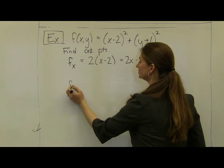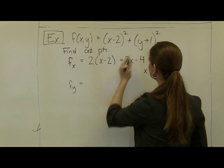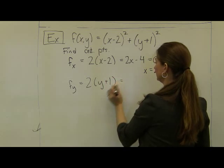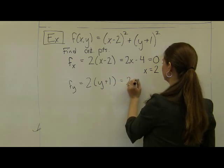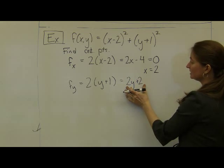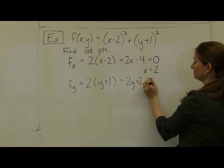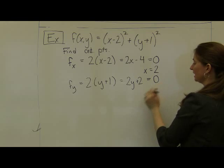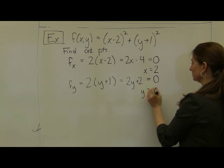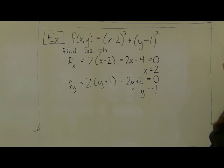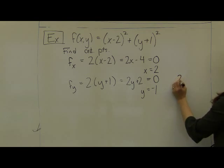Similarly, taking the partial derivative with respect to y gives 2(y+1), which equals 2y + 2. This is also a continuous function, so I won't have any problems with this partial derivative not existing. Setting it equal to zero, I find that y equals negative 1. These are the only possible x and y values, so I've found a critical point at the point (2, −1).